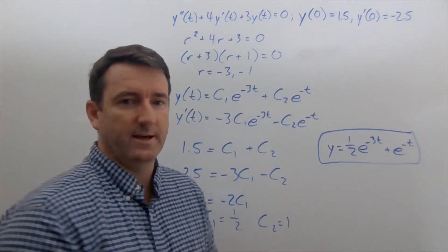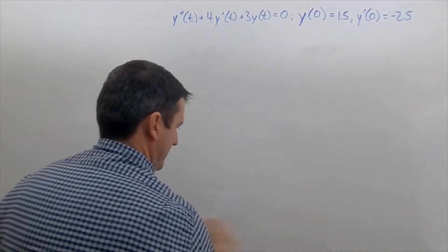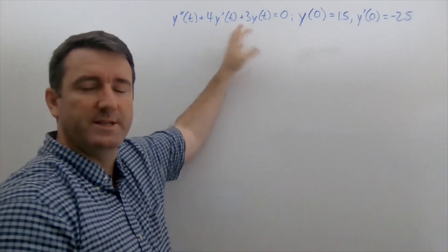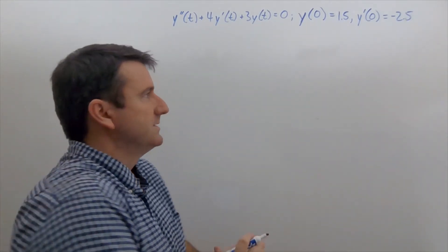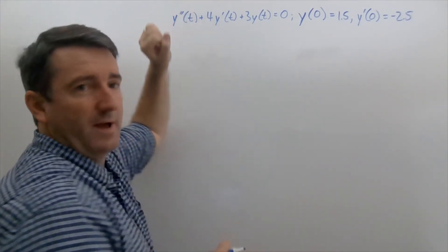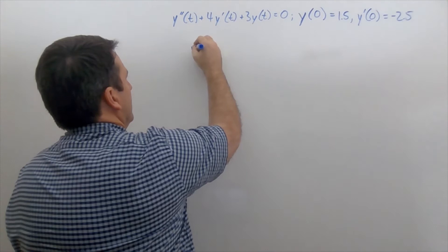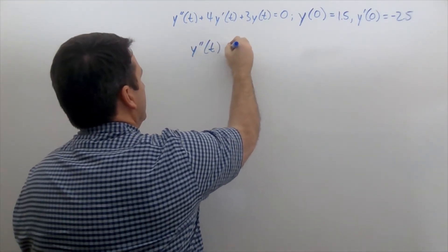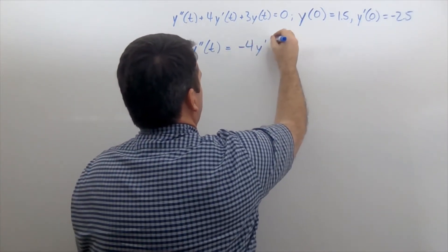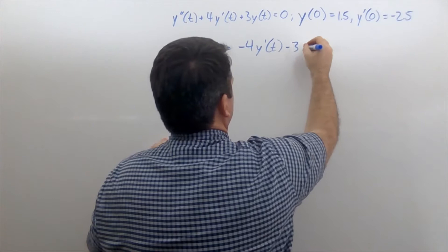Now let's look at Euler's method. The first thing we want to do is put this into a system of equations in normal form. What we mean by that is we're going to take the highest order derivative — we've got a second derivative — and solve for it: y'' = -4y' - 3y.